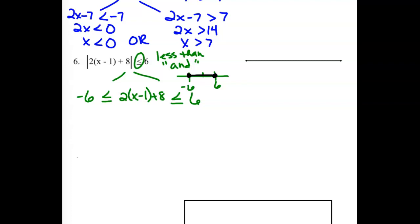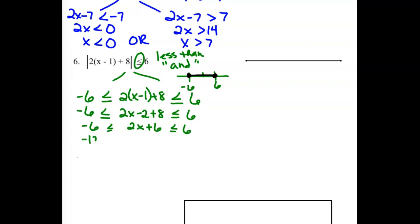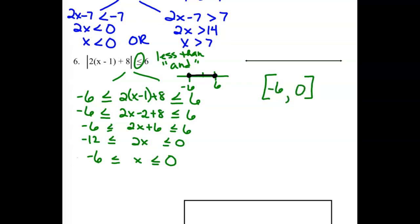Simplifying inside, we get 2x minus 2 plus 8. Combining like terms gives 2x plus 6. Subtracting 6 from both sides gives negative 12 on the left and 0 on the right. Dividing out the 2 gives us negative 6 and 0. Since we can include the endpoints, we use squared brackets. Our interval notation solution is negative 6 to 0, including the endpoints, and our graph shows everything between negative 6 and 0.